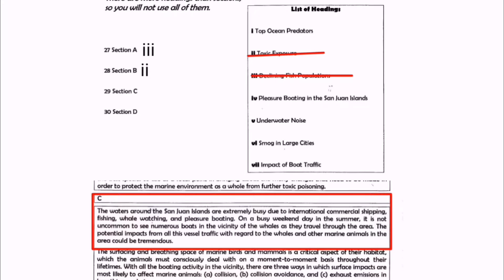Let's read paragraph C. The waters around the St. John Islands are extremely busy due to international commercial shipping, fishing, whale watching, and pleasure boating. St. John Islands is the key word. The seawater around St. John Islands remains busy due to these four factors. Heading number four, pleasure boating in St. John Islands, is a trap because in the paragraph four factors are given due to which the water around St. John Islands remains busy, and pleasure boating is only one of these.